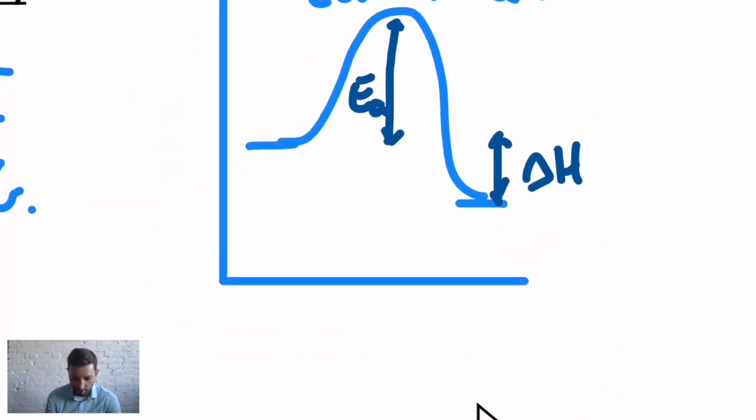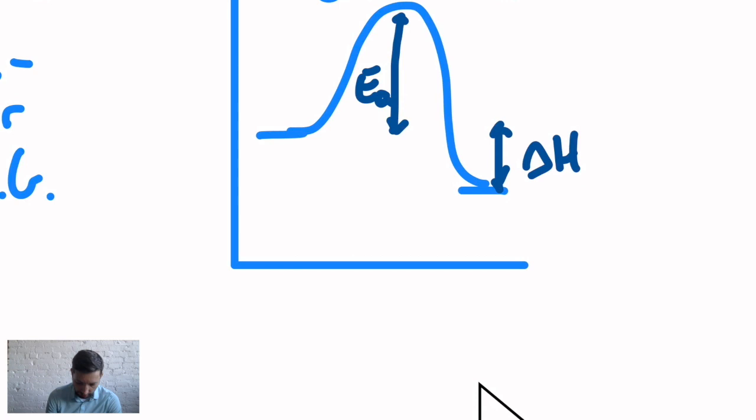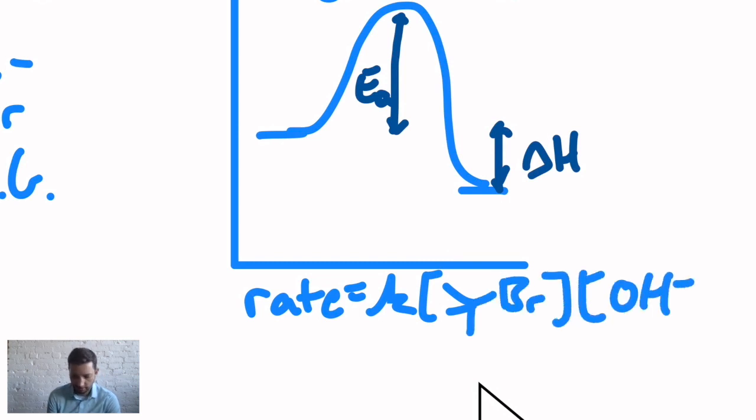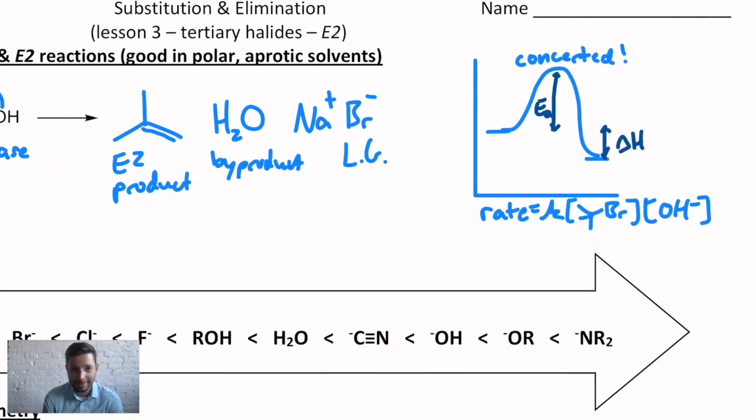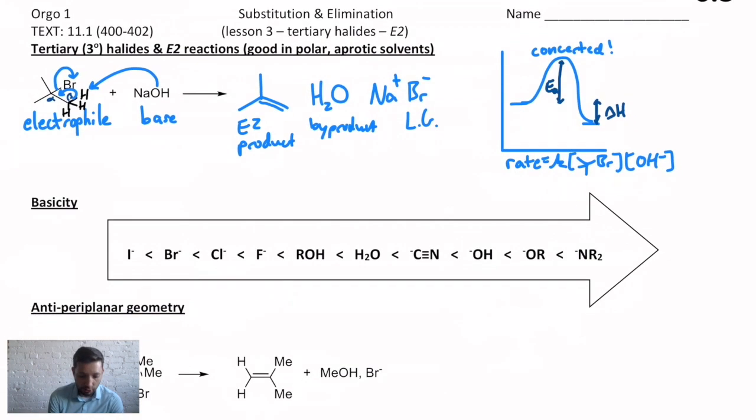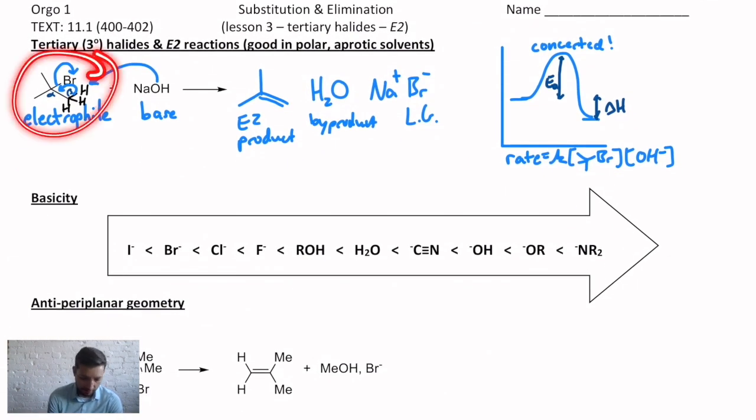And then this is also a bimolecular reaction. The rate is a rate constant times the concentration of both reactants, t-butyl bromide, and the base, in this case, hydroxide ion. I know we don't do a lot of kinetic studies in this class, but that's just what the 2 in E2 actually means. So this is what we see when we have a tertiary halide, and something that's reactive and electron-rich acts as a base instead of a nucleophile.